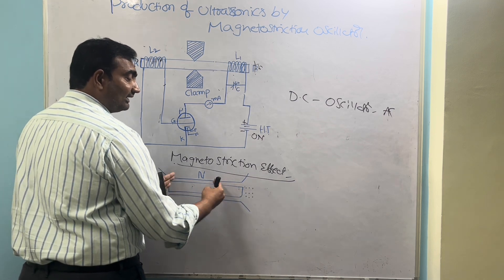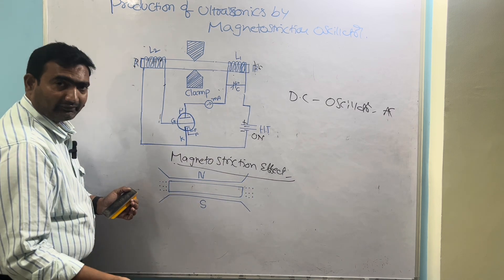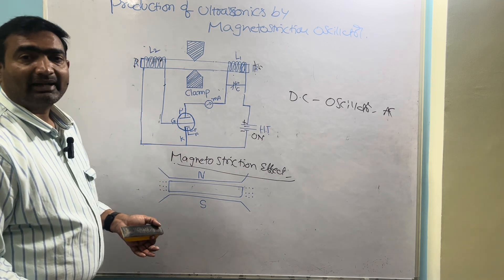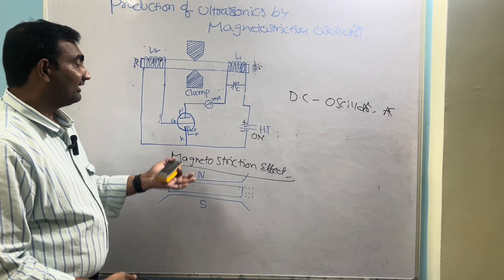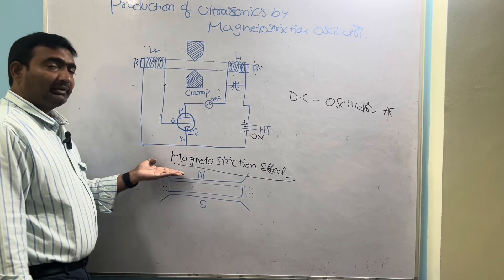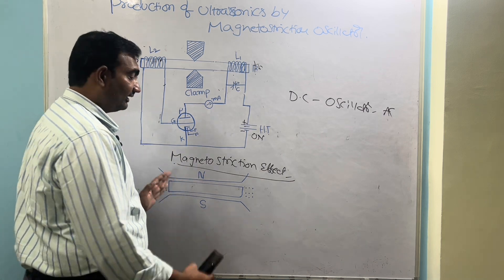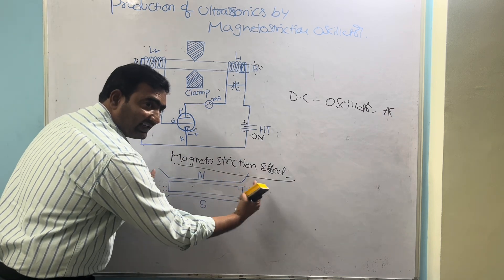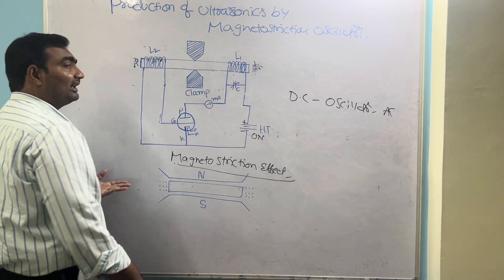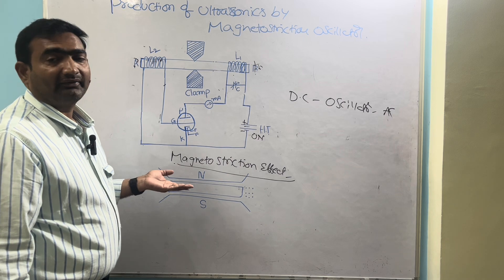That change in length creates vibrations, and those vibrations produce waves. This is the basic idea behind the working of the magnetostriction oscillator. This phenomenon is called the magnetostriction effect. If you apply an AC signal of higher frequency, then the changes in expansions and contractions are much more rapid, and accordingly the waves produced also have that much frequency.